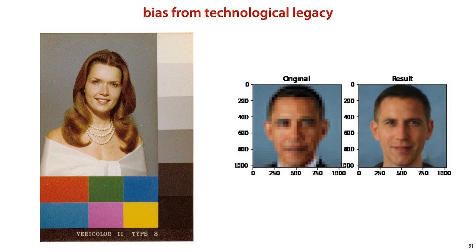Since digital photography was largely developed to mimic film, it's quite possible that some of these biases are still present in modern-day technology. A more recent example is the Pulse system — a rather ingenious method for generating high-resolution versions of low-resolution photographs. Interestingly, the method doesn't require any training data of its own; it relies on an existing generator network called StyleGAN. Unfortunately, StyleGAN turned out to be biased, most likely as a result of the data it used. The result was that images of non-white people were upsampled to look like white people.